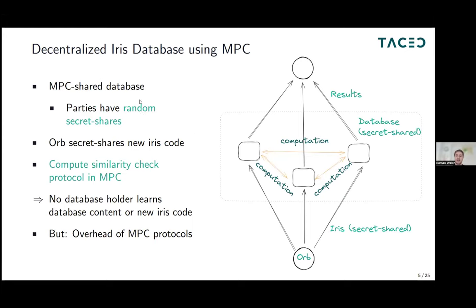In this project, we want to address these privacy implications by applying MPC to split this database amongst multiple neutral distrusting parties. After applying MPC, we have multiple parties where each party has a secret share of the database. These shares on their own contain no information — no party knows anything about the iris codes stored. But if they collude, they could reconstruct the whole database. When a new human wants to sign up, they also secret-share their iris code to these database holders, so none of them learn anything about the new iris code. We can then use MPC protocols to check whether this new iris is contained in the distributed database.